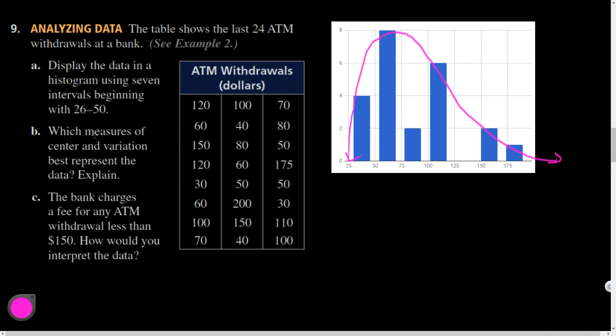All right. So the best measure of center is going to be the median. Which way is this skewed? Someone said it. Skewed right. And because it's skewed and not symmetric, a median will be a better measure of center. Median might be somewhere around here. And the best measure of variation would be a box and whisker or a five-number summary. Because it is skewed.